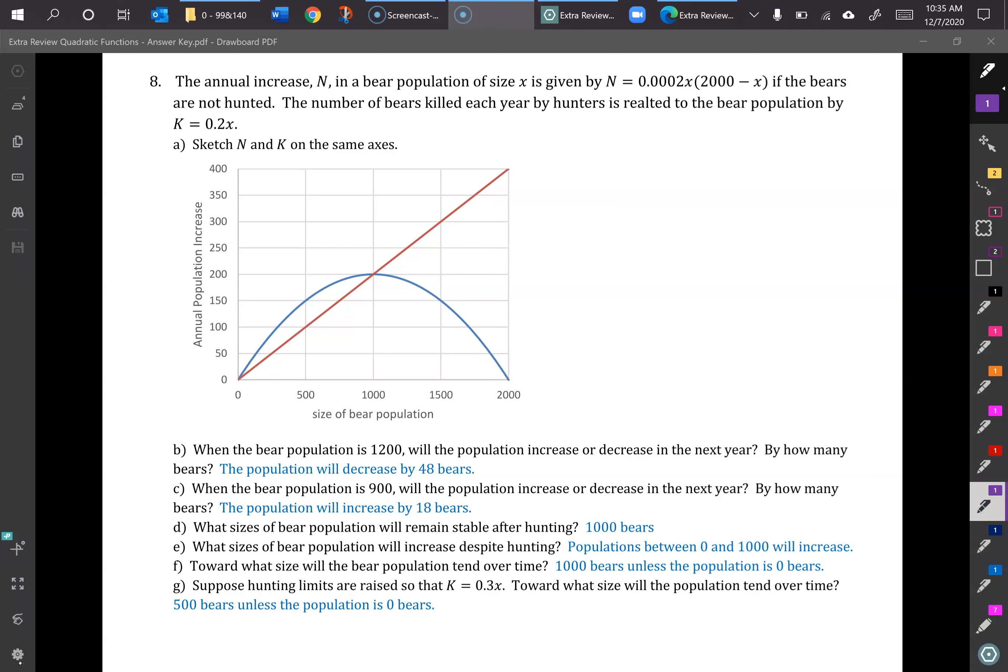The number of bears killed each year by hunters is related to the bear population by k equals 0.2x. So the first thing to do is just make this sketch. I have it already done here. If you're wondering how that came about, we have the factored form of the quadratic. If we set 0.0002x equal to 0, we're going to get x equals 0. And then the other one would be 2000 minus x equals 0, which would be 2000 equals x.